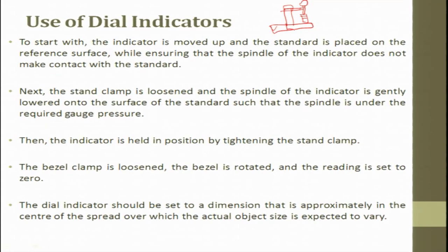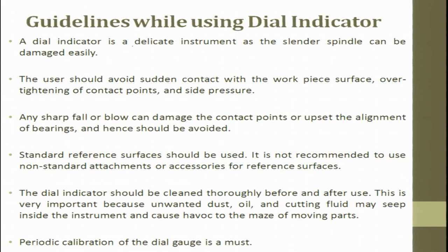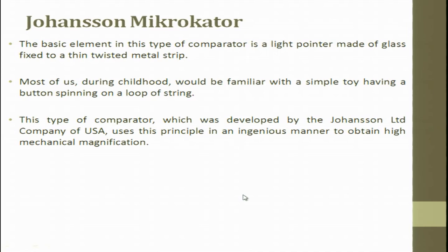The stand clamp is loosened and the spindle of the indicator is gently lowered to the surface of the standard until under the required gauge pressure, then held in position by tightening the stand clamp. The bezel clamp is loosened, the bezel is rotated, and the reading is set to zero. The dial indicator should be set to dimensions approximately in the center of the spread over which the actual object size varies. The dial indicator is a delicate instrument and the slender spindle can be damaged easily, so avoid sudden contact, over-tightening of the contact point, or sharp falls. Periodic calibration of the dial gauge is a must.